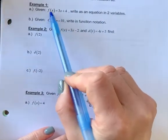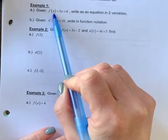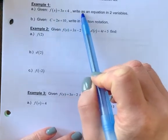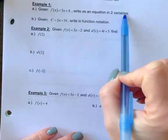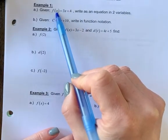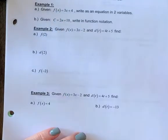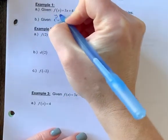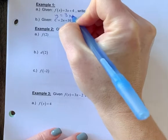Example 1. Given function f of x, that's how this is read, is equal to 3x plus 4, write as an equation in two variables. So instead of writing it as f of x, I can just write f of x as y. So this would just be y equals 3x plus 4.